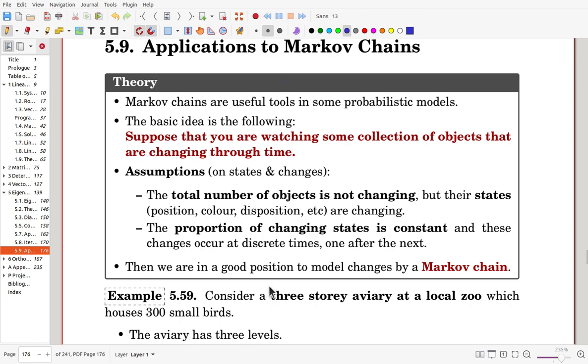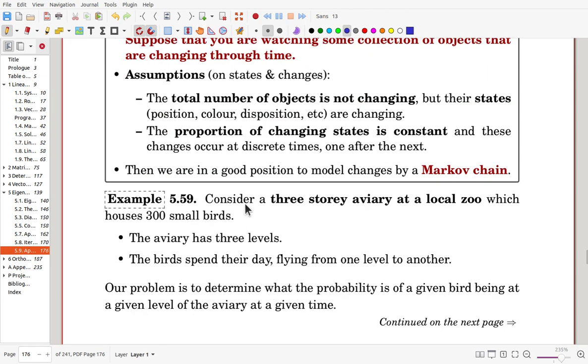See this example. Consider a three-story aviary at a local zoo which houses 300 small birds. The cage has three levels. The birds spend their day flying from one level to another.